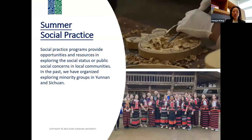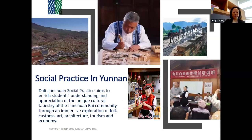The third area is summer social practice, which provides opportunities to explore social status or public concerns in local communities. In the past, we organized explorations of minority groups in Vietnam and Sichuan province. This year, we are planning a Dali Jianchuan social practice aimed at enriching students' understanding and appreciation of the unique cultural tapestry of the Jianchuan Bai community through immersive exploration of folk customs, art, architecture, tourism, and economy.